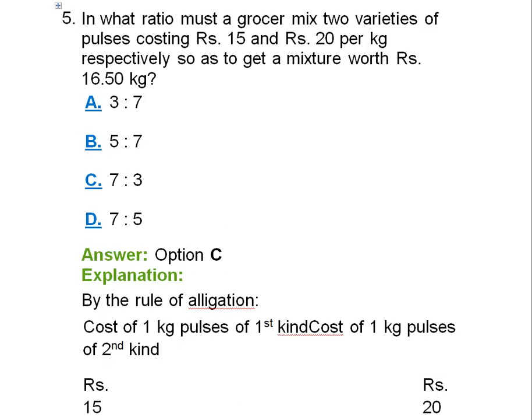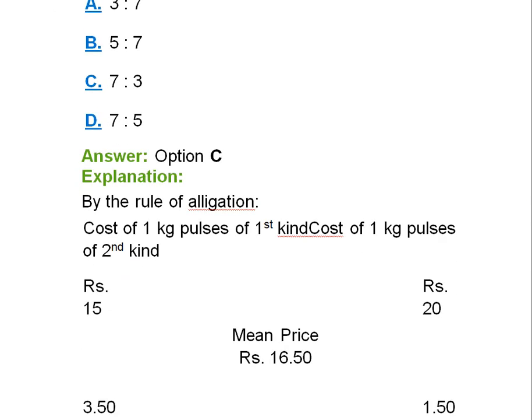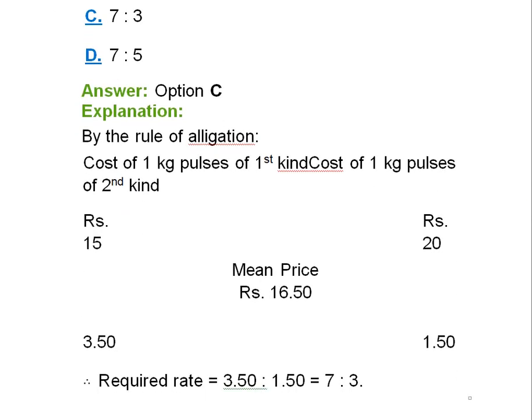In what ratio must a grocer mix two varieties of pulses costing Rs. 15 and Rs. 20 per kg respectively, so as to get a mixture worth Rs. 16.50 per kg? So the same concept will be used which was used in the question before this, question number 4.